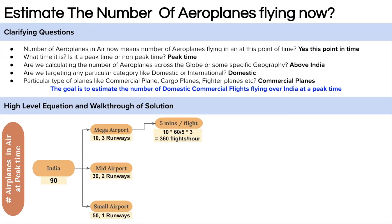So how many flights take off or land in 1 hour at mega airports? That's 10 airports × (60 ÷ 5) × 3 runways. There are 10 airports; every 5 minutes a flight lands or takes off, so in an hour that's 60 ÷ 5 = 12; multiplied by 3 runways. This gives around 360 flights that take off or land per hour across all mega airports.